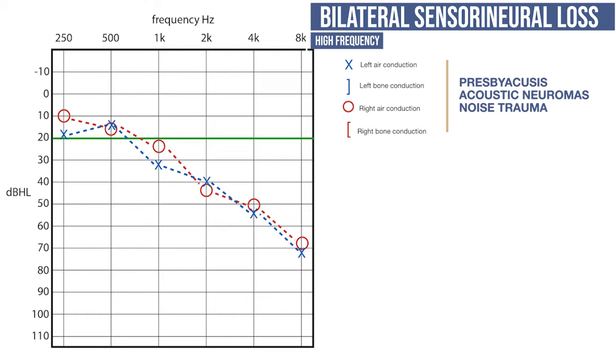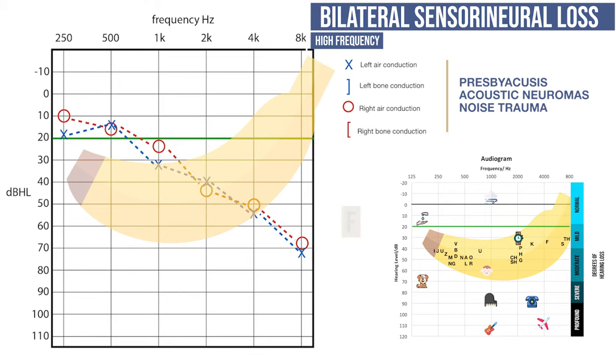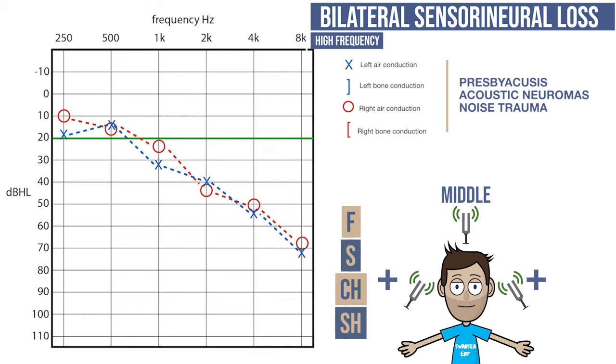A particular issue for those suffering from presbyacusis is listening to speech. If you refer back to the speech banana, you can see that high frequency sounds and many consonants will be difficult to hear. As the loss is bilateral, you are not likely to see anything unusual on tuning fork testing other than a gross hearing difficulty. This demonstrates the usefulness of an audiogram.